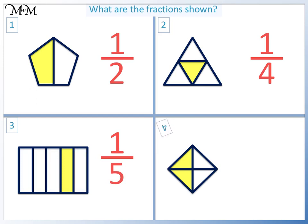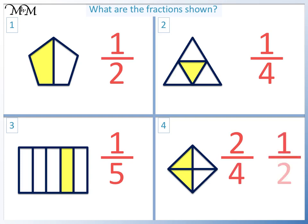Question four: we have two out of one, two, three, four. This is two quarters. This is the same as one out of two — one half.